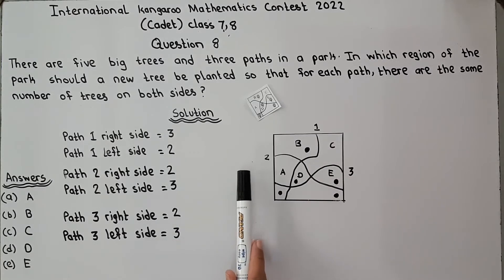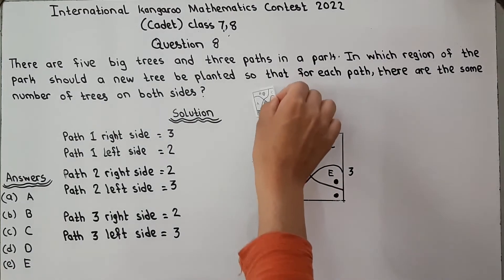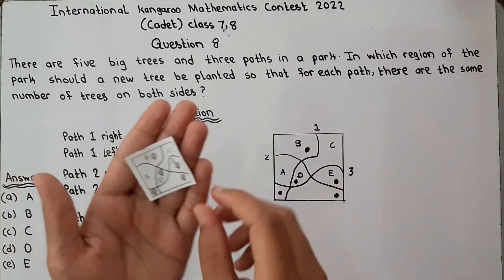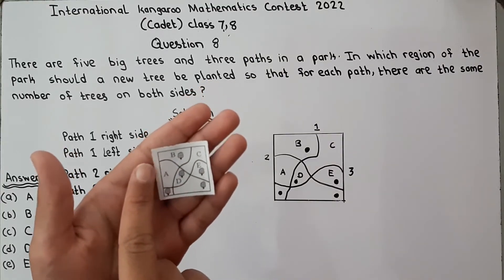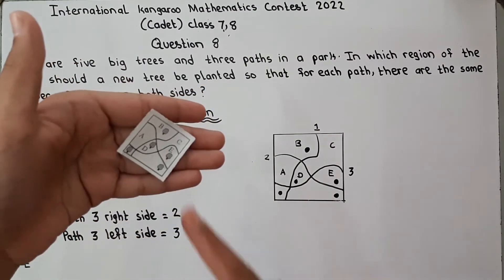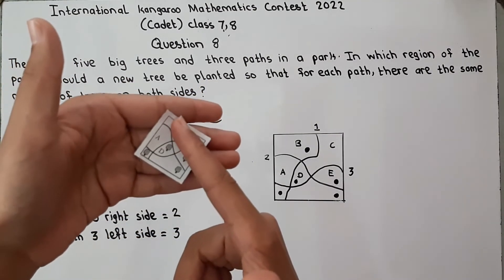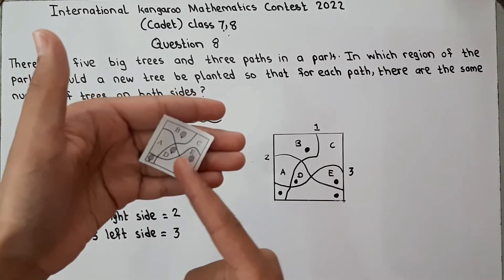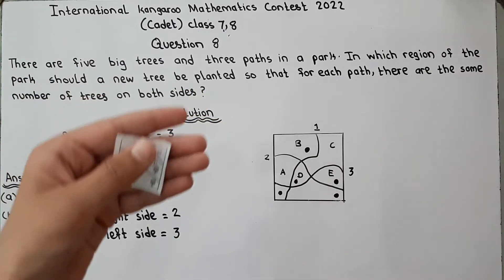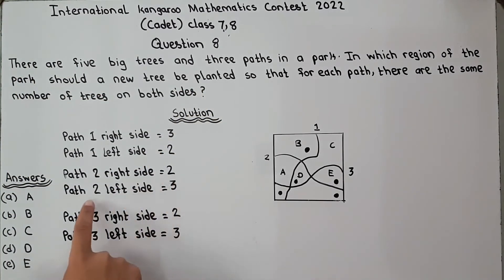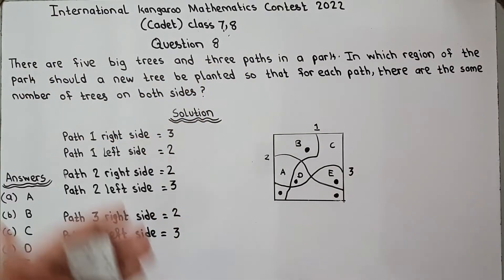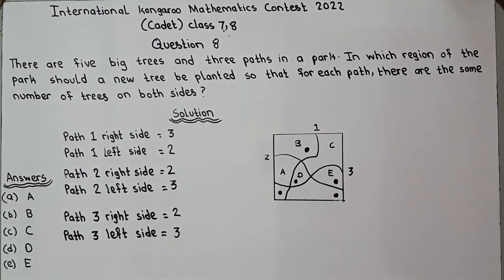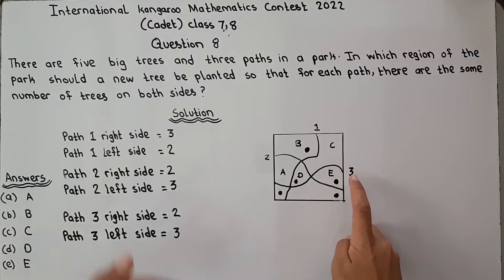In path 2, this is path 2. On the right side there are 2 trees and on the left side there are 3 trees. So on path 2, the left side has 3 trees.